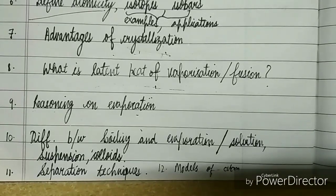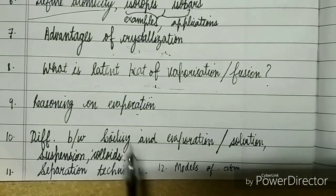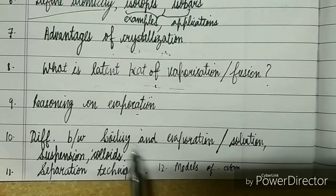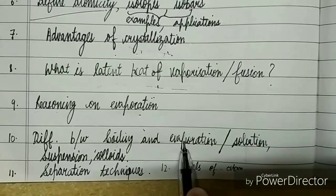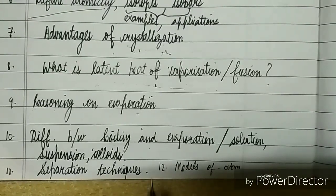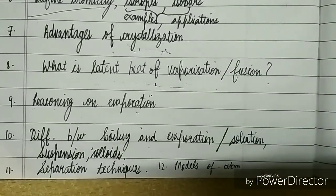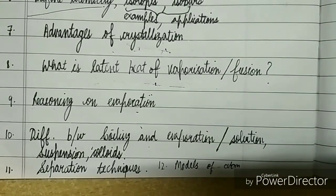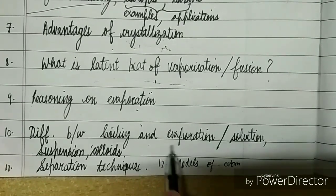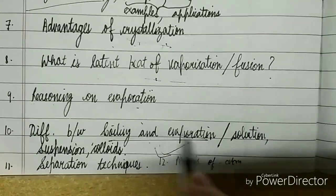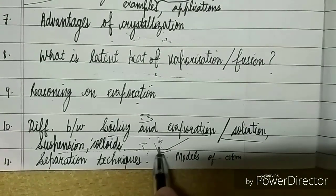Now let's move towards the tenth question: the difference between boiling and evaporation. You should be clear with three points at least because the question generally comes in three marks. Then you have difference between solution, suspension, and colloid. You should be aware about all the points. This can come in three marks, four marks, or five marks, so be clear with this.